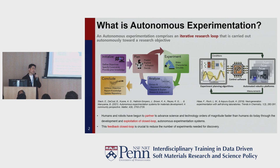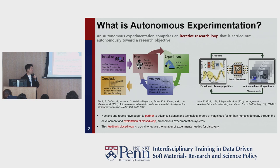Autonomous experimentation comprises an iterative research loop that is carried out autonomously toward the research objective without human intervention. The key point of autonomous experimentation is this kind of closed-loop system, where they conduct the experiment, analyze results, and plan the next sampling point. Today, I'd like to introduce how to select the next sampling point and how to control the experiment equipment using Python code.